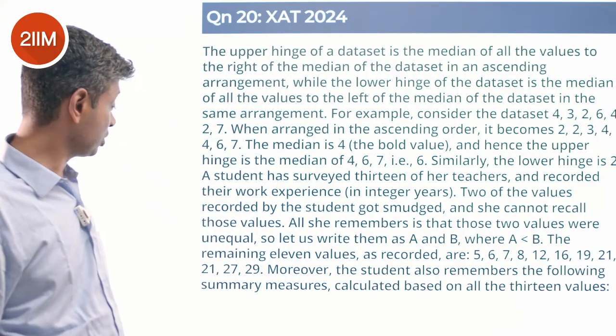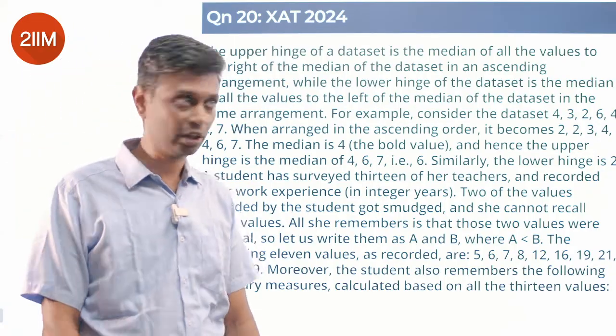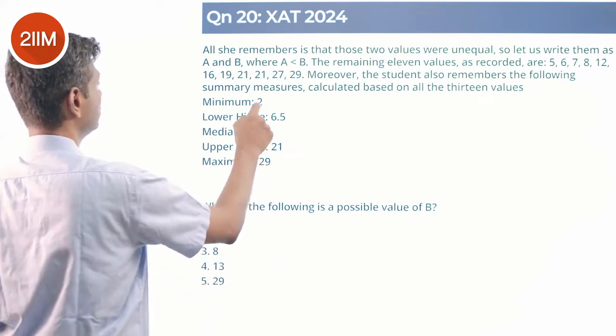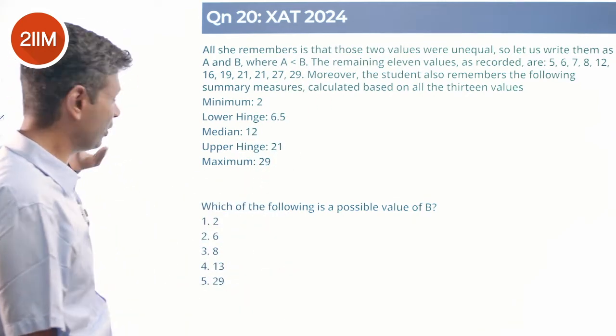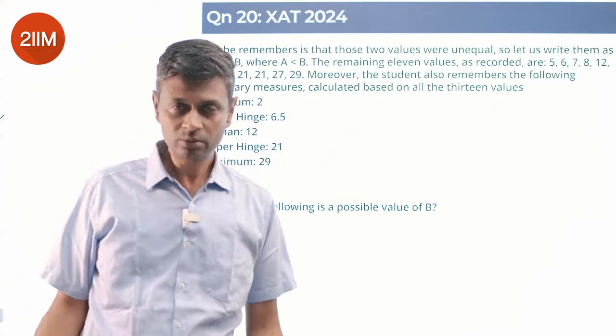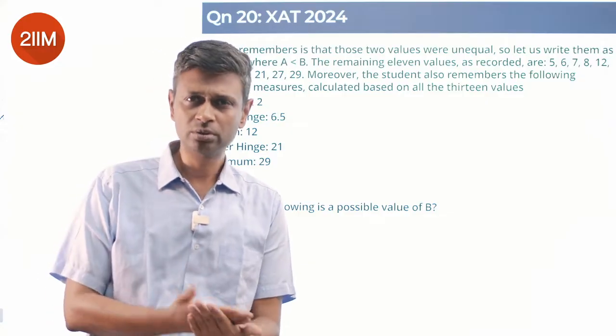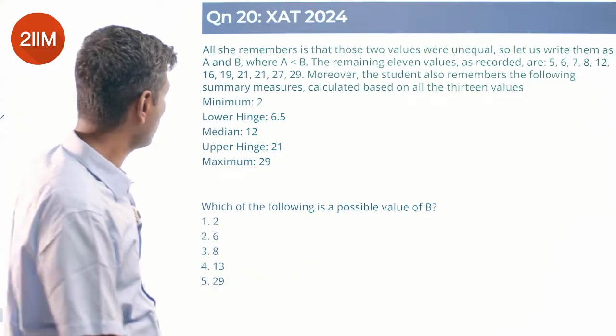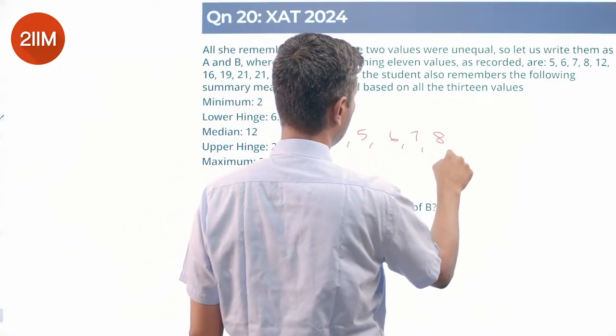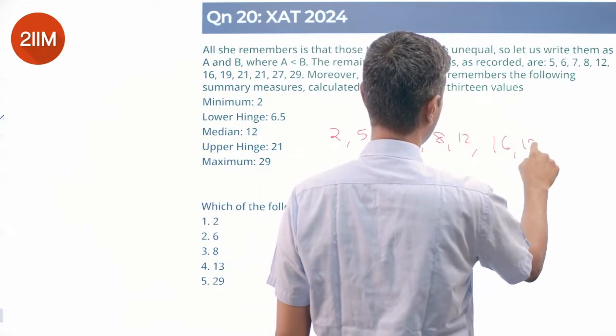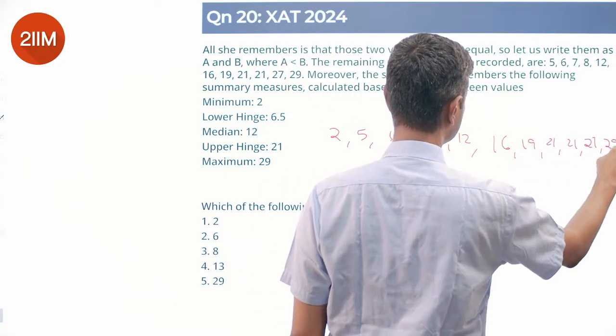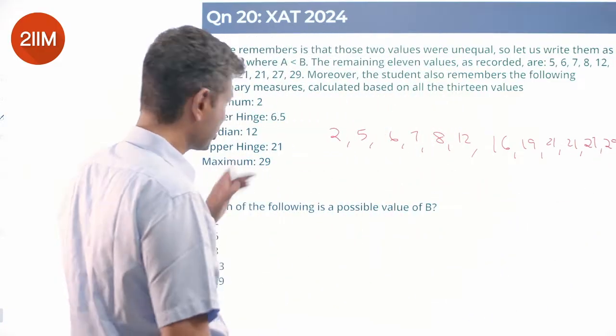Moreover, the student also remembers the following summary measures calculated based on all 13 values. The minimum is 2. There's no 2 here, so A is 2. That's a big giveaway - the minimum is 2, there's no 2 in the 11 sets, so 2 has to be from one of the people. So the smaller value is 2. Already we're saying 2, 5, 6, 7, 8, 12, 16, 19, 21, 21, 27, 29. The maximum was 29, that satisfies.